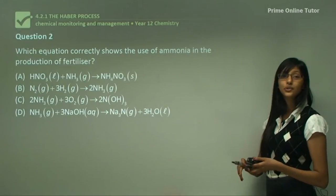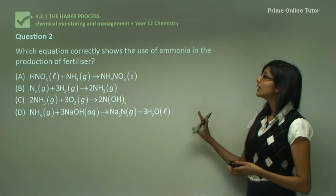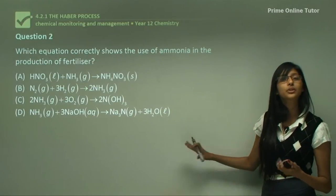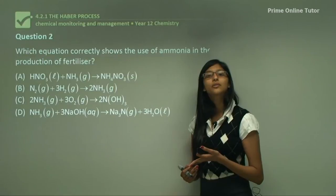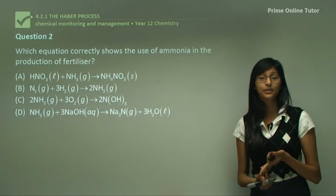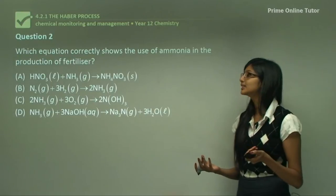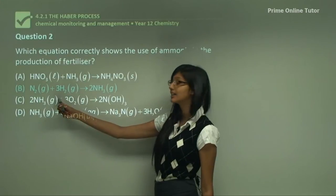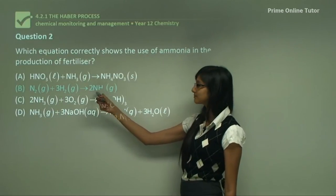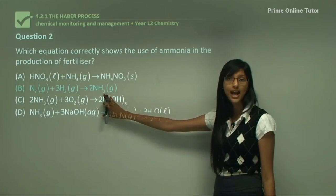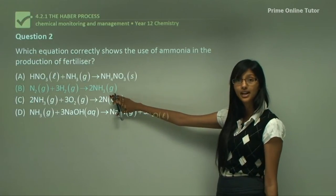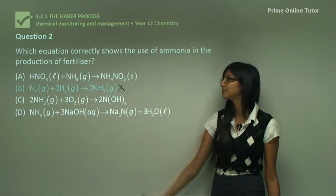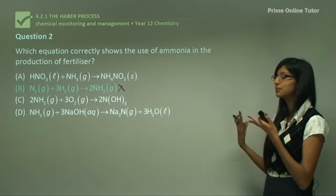Now let's move on to Question 2, which asks: which equation correctly shows the use of ammonia in the production of a fertilizer? We first need to figure out which equation produces a fertilizer such as ammonium sulfate or ammonium nitrate. Equation B tells us that nitrogen plus 3 molecules of hydrogen produces 2 molecules of ammonia. However, ammonia should be one of our reactants; in this equation it is shown as a product, so this is not the answer — we want to make our fertilizer from ammonia, not produce ammonia itself.